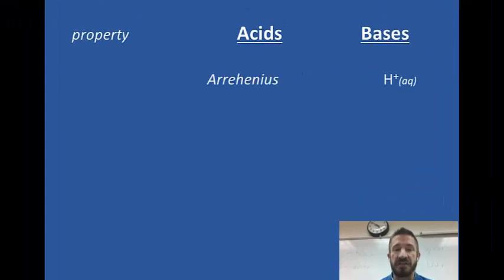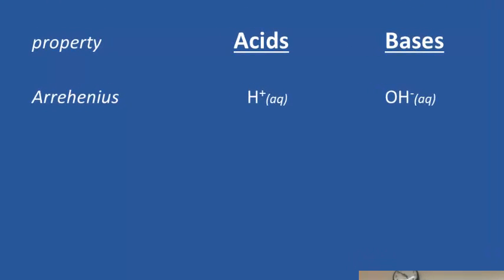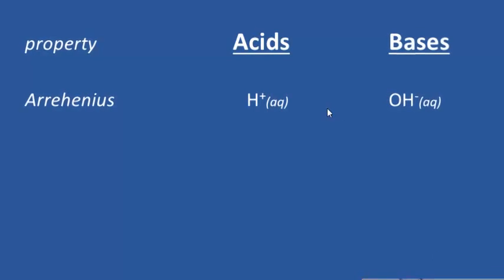So first, properties of acids and bases. The Arrhenius definition: acids have H+ in solution — another word for H+ is a proton. Bases have hydroxide; if there's hydroxide present, it's a base. For pH: acids have a pH of less than 7, bases have a pH of greater than 7. If the pH is right at 7, there's an equal amount of acid and base, and we say it's neutral.